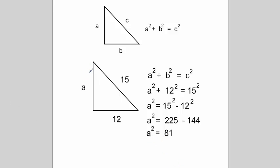And are we finished yet? Do we know what a is? Well, we still need to take the square root. So if we take the square root of 81, a equals, square root of 81 equals 9. So a equals 9.